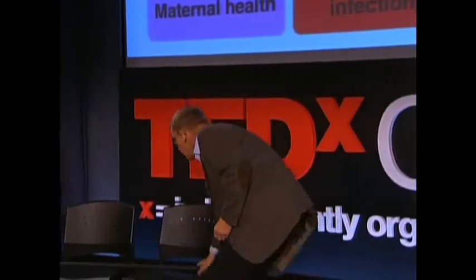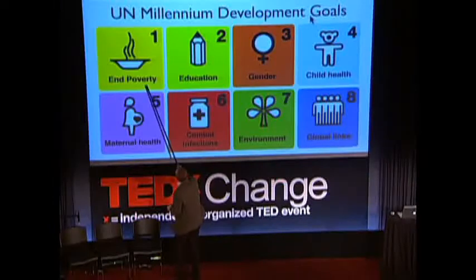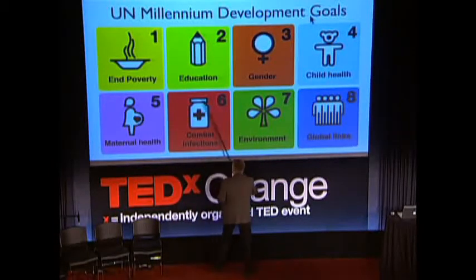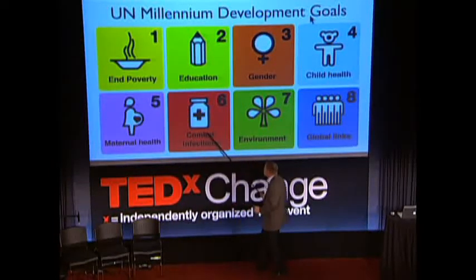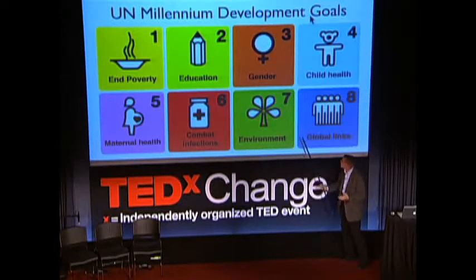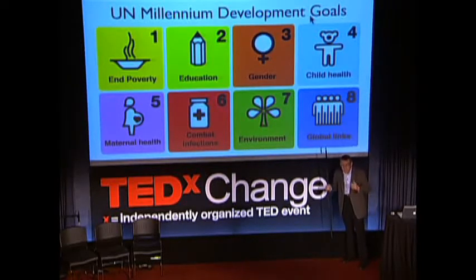You have to end poverty, education, gender, child, end maternal health, control infections, protect the environment, and get good global links between nations in every aspect from aid to trade.